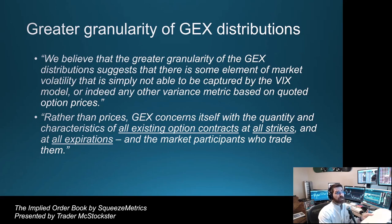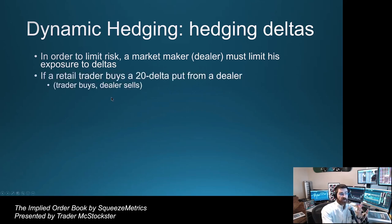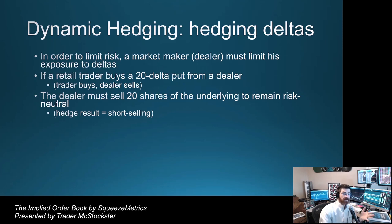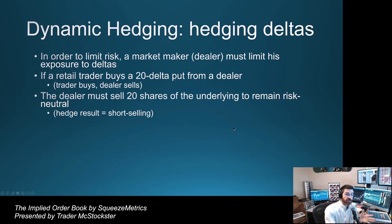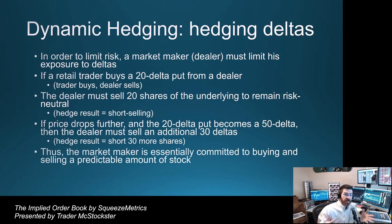Next, they get into the idea of dynamic hedging — specifically, hedging deltas. In order to limit risk, a market maker or dealer must limit their exposure to deltas. For example, if a retail trader buys a 20 delta put from a dealer, the dealer is now exposed. To remain risk-neutral, the dealer must sell 20 shares of the underlying, so the hedge result is short selling. If the price drops further and a 20 delta put becomes a 50 delta, the dealer must sell an additional 30 shares. Thus, the market maker is essentially committed to buying and selling a predictable amount of stock.